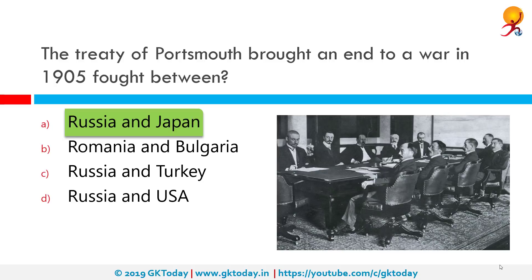It was signed on September 5, 1905, after negotiations lasting from August 6 to August 30, at the Portsmouth Naval Shipyard in Kittery, Maine, United States.